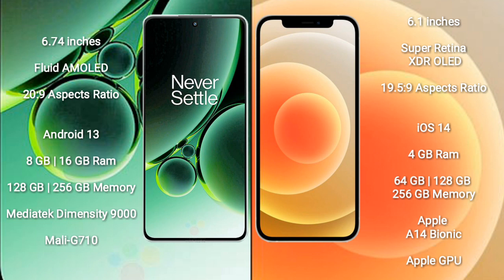OnePlus Nord 3 comes with 8GB or 16GB RAM and 128GB to 256GB internal storage, MediaTek Dimensity 9000 processor, and Mali-G710 GPU.